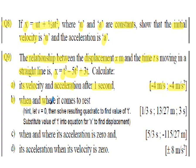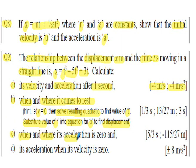Question 8: x = ut + (1/2)at², where u and a are constants. Differentiate once to get dx/dt (velocity equation); substituting t=0 gives initial velocity = u. Differentiate again for d²x/dt² (acceleration); substituting t=0 gives acceleration = a. Question 9: x = t³ − 5t² + 3t. Part a — differentiate to find velocity and acceleration after 1 second (answers: −4 m/s and −4 m/s²). Part b — set v = dx/dt = 0, solve the resulting quadratic for t, then find displacement. Part c — set acceleration = 0 to find t, then find displacement. Part d — find acceleration when velocity = 0.